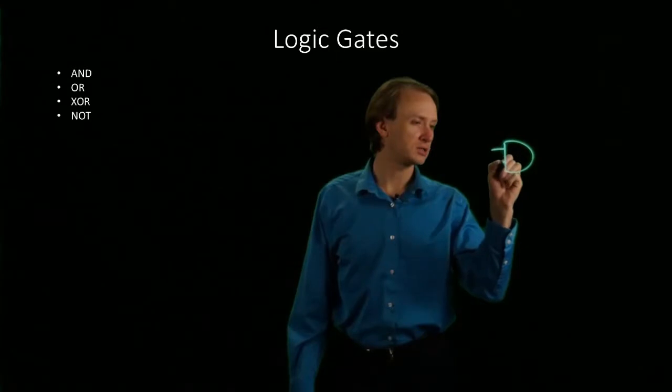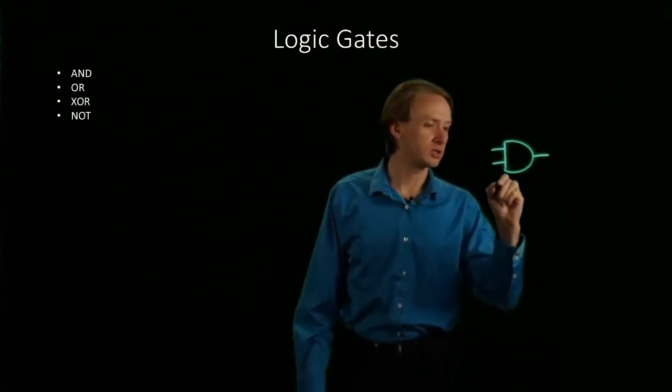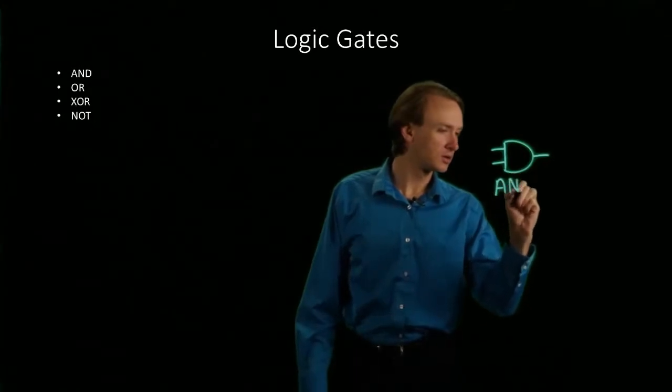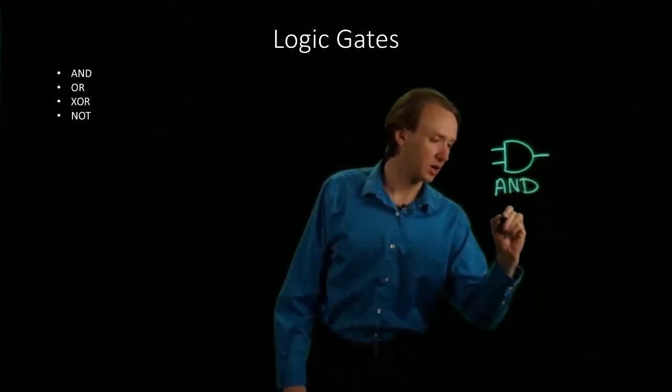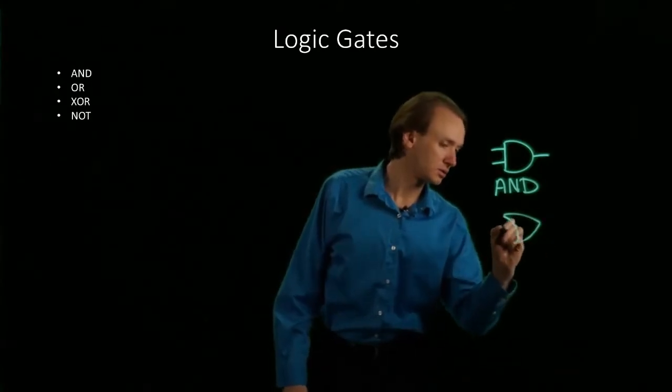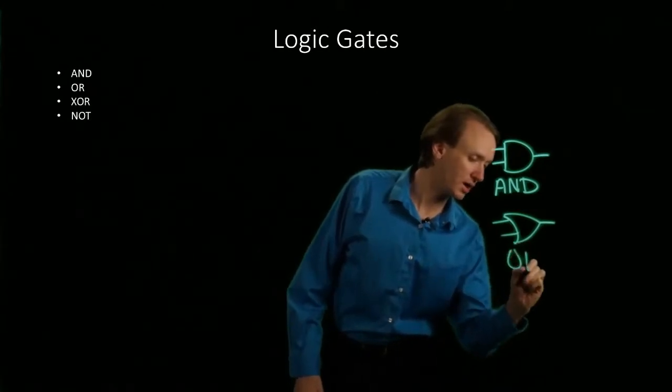Our AND gate takes two inputs, produces one output. Similarly, our OR gate takes two inputs and produces one output.